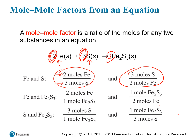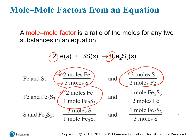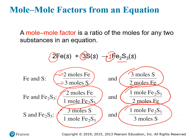We can also look at other substance pairs. For iron and the product iron sulfide: two moles of iron for every one mole of iron sulfide, or the reciprocal — one mole of iron sulfide for every two moles of iron. For the last pair, sulfur and iron sulfide: three moles of sulfur for every one mole of iron sulfide, or vice versa. So the numbers in front tell you the ratio — if I have two moles of iron, I need three moles of sulfur to react it.